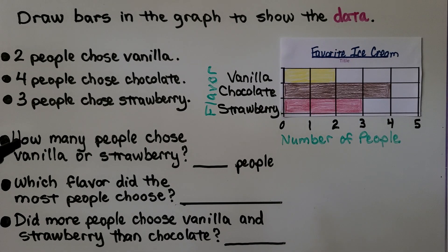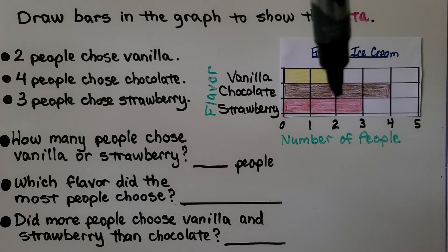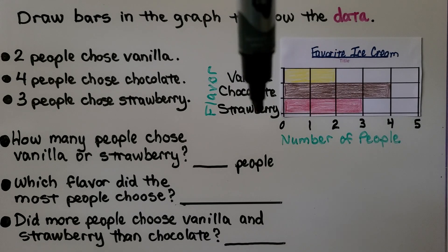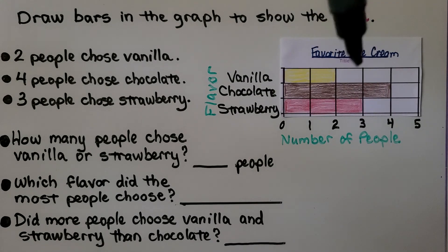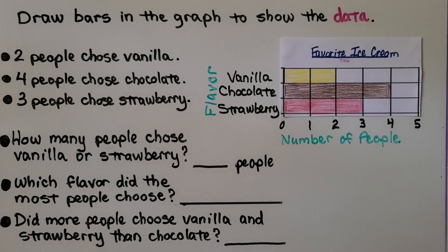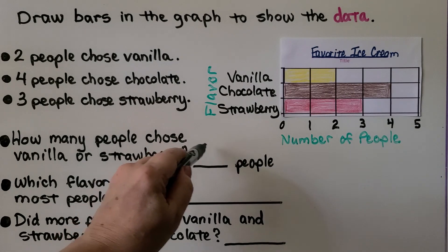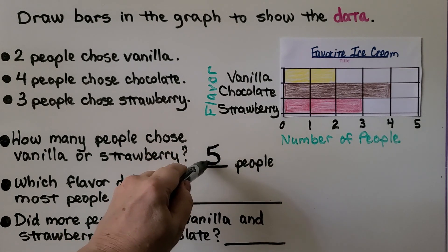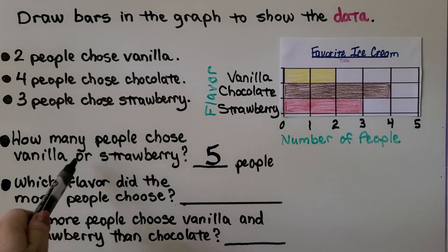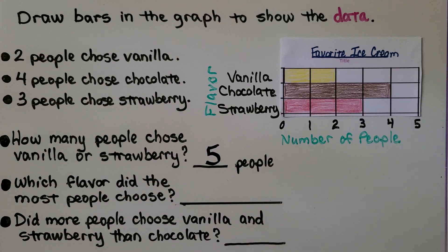How many people chose vanilla or strawberry? We look at the number of vanilla is two. We look at the number of strawberry is three. We add two plus three. That means the number of people that chose vanilla or strawberry is five. It says vanilla or strawberry. We need to add them together.